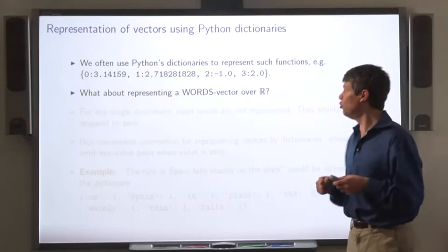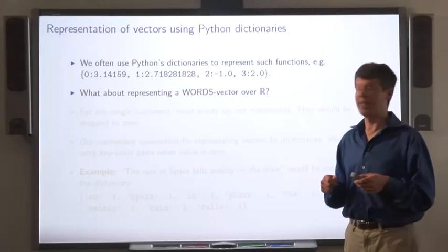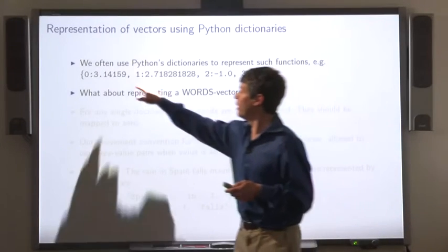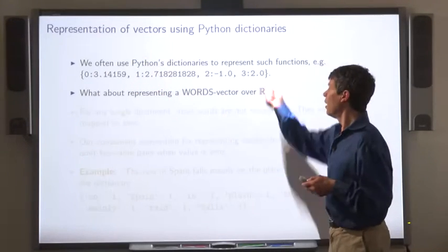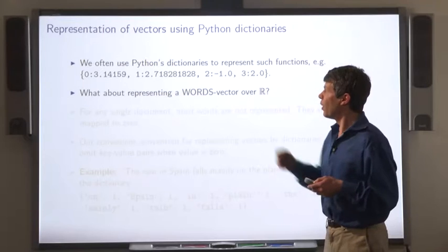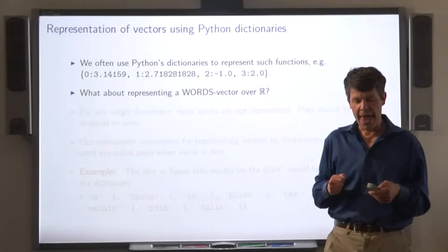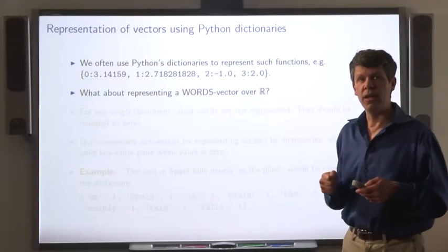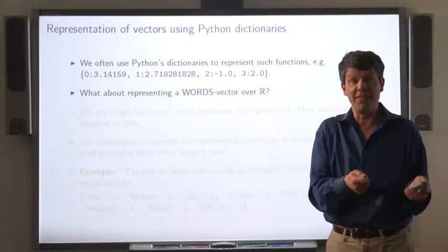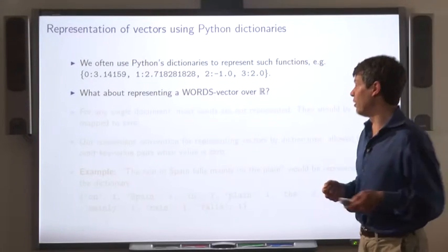So we're often going to use Python's dictionaries to represent functions. So, for example, this is the function that represents the vector we just talked about. What about representing a document, that is, a word bag, a function from the set of all English words to the real numbers?